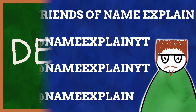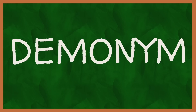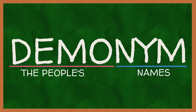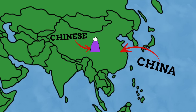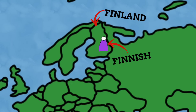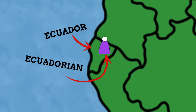A demonym is a type of noun used to specify the natives of a particular place. The most commonly used kind of demonyms are ones that relate to countries. For example, Chinese is the demonym used for someone from China, Finnish is the demonym for someone from Finland, and Ecuadorian is the demonym for someone from Ecuador.